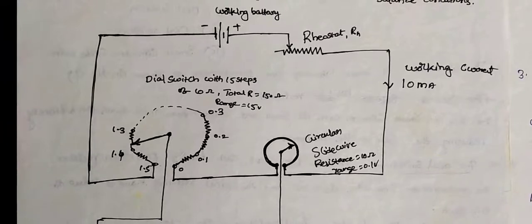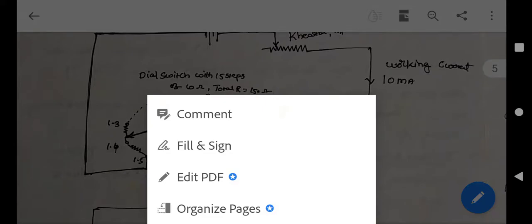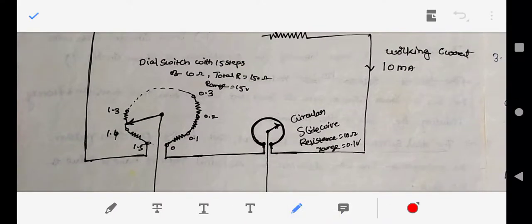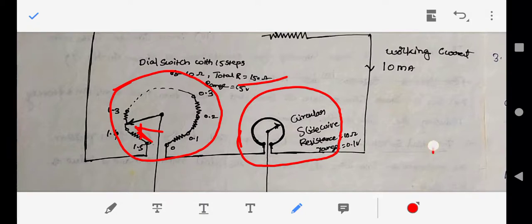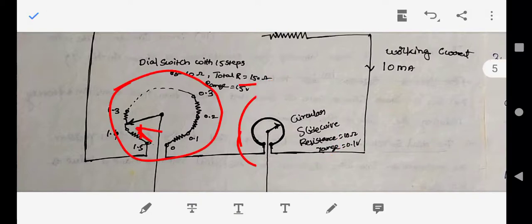In Crompton's potentiometer, the dial switch has a total resistance of 150 ohms and the circular slide wire has a resistance of 10 ohms. There are 15 steps, giving 150 ohms total for the dial, plus 10 ohms for the slide wire. When the switch is in the calibrate position, the standard cell is connected; when in operate position, the unknown EMF is connected to the potentiometer.